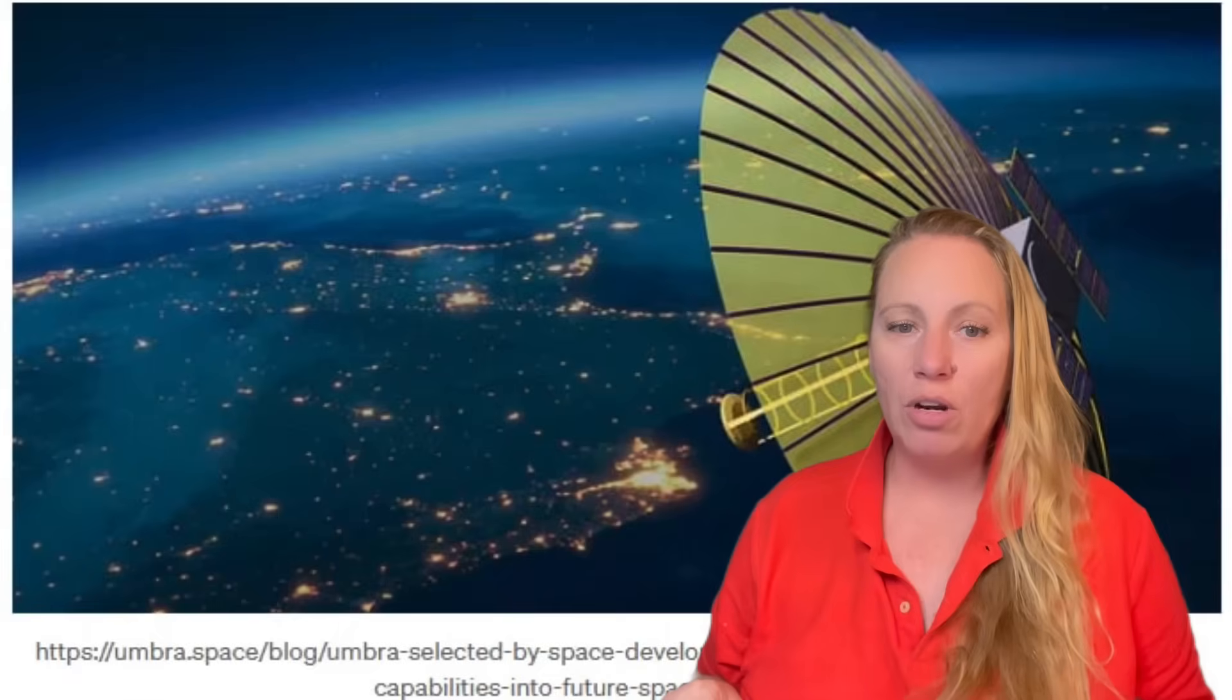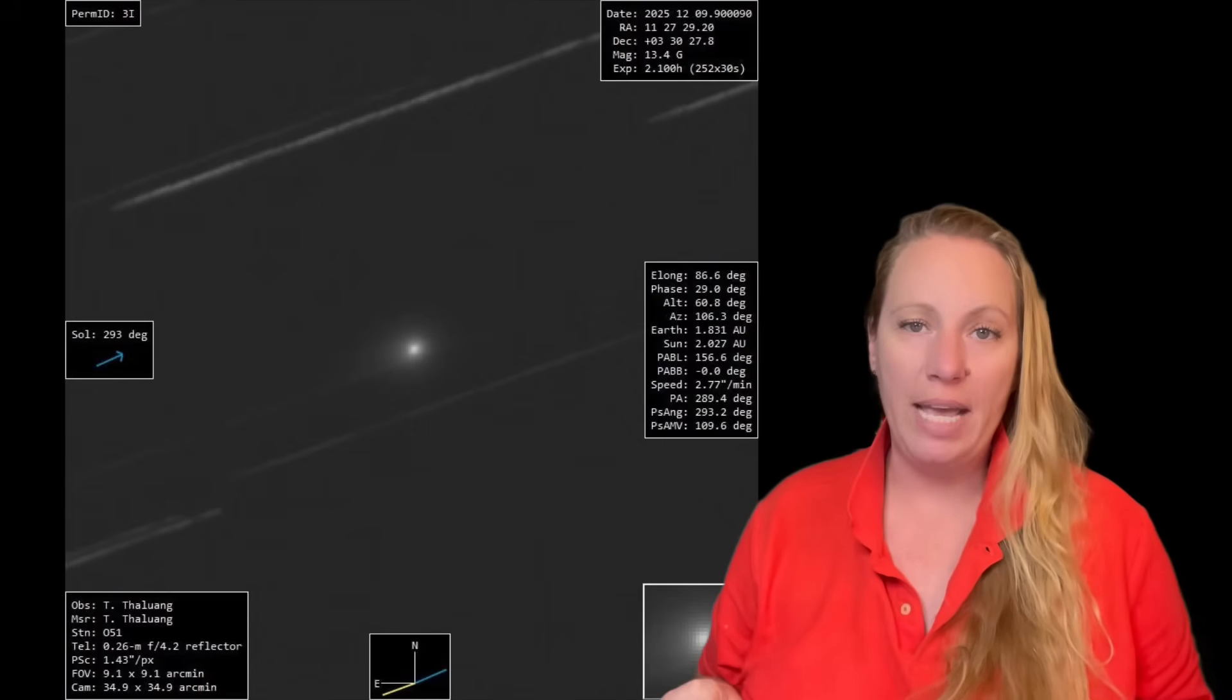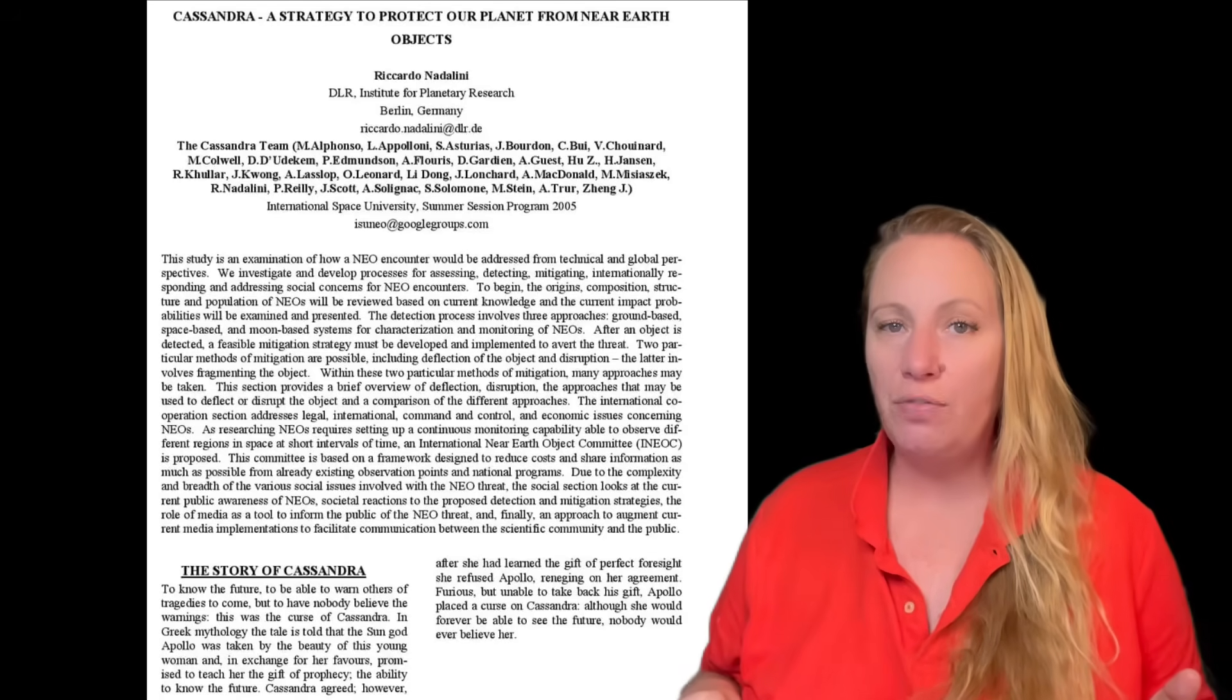Like observers and amateur astronomers have noted unusual geometric patterns and structured emissions from 3i Atlas that are inconsistent with natural cometary behavior. I have made tons of videos explaining each one of them. 3i Atlas is absolutely different from everything else we've ever seen before. So that prompts speculation that the object was a long-term test target for highly classified U.S. space-based observation infrastructure.